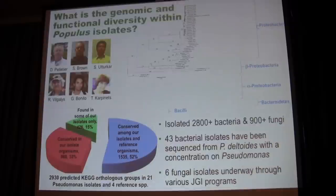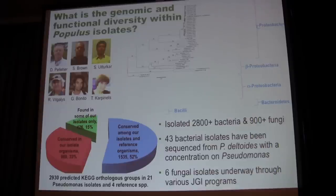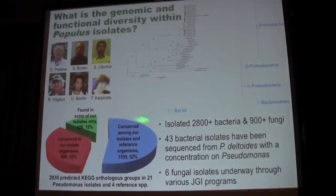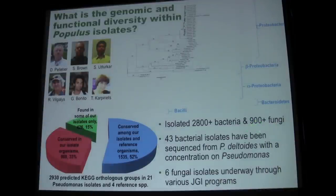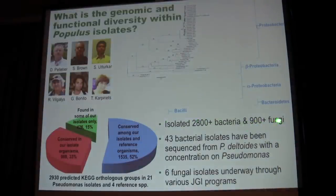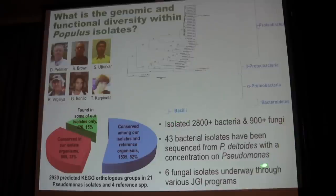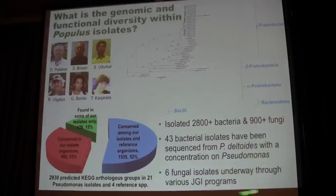We need to get to the component level — the genomes and organisms we've isolated from these environments. There are a lot of collaborators involved, and we've isolated over 2,800 bacteria and 900 fungi from these systems over the last few years. Recently, we sequenced about 43 bacterial isolates with a focus on Pseudomonas, to get a local-scale pan-genome associated with just a few roots of Populus, and then also some isolates that are in various stages at JGI.